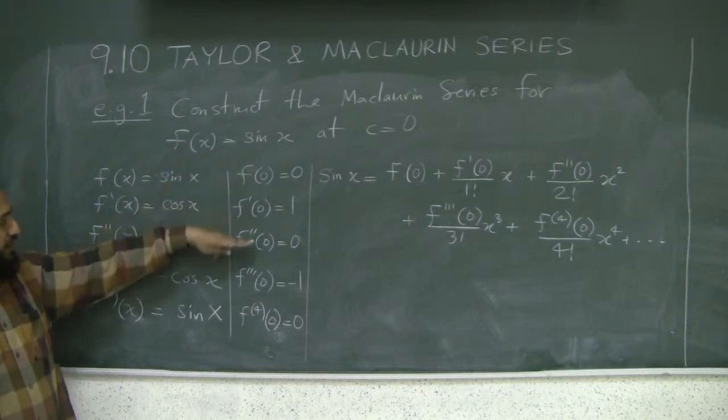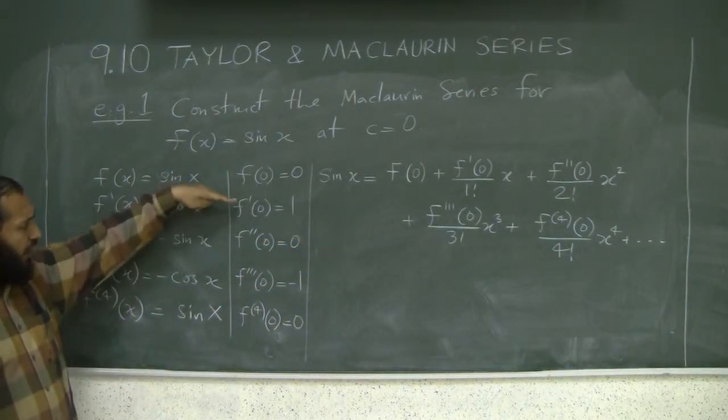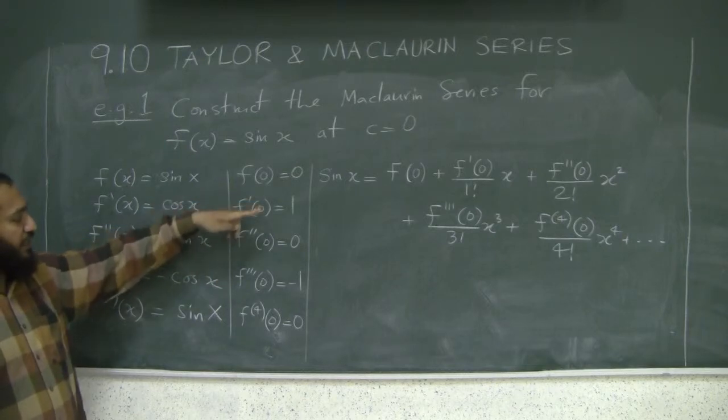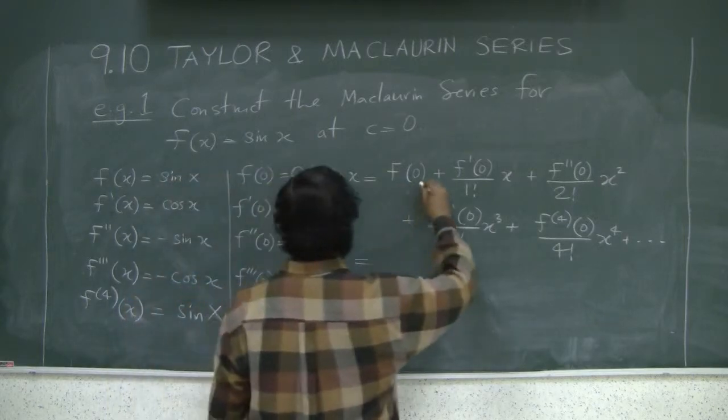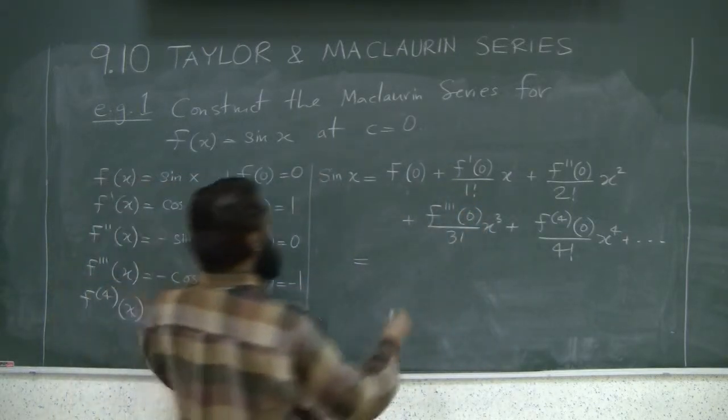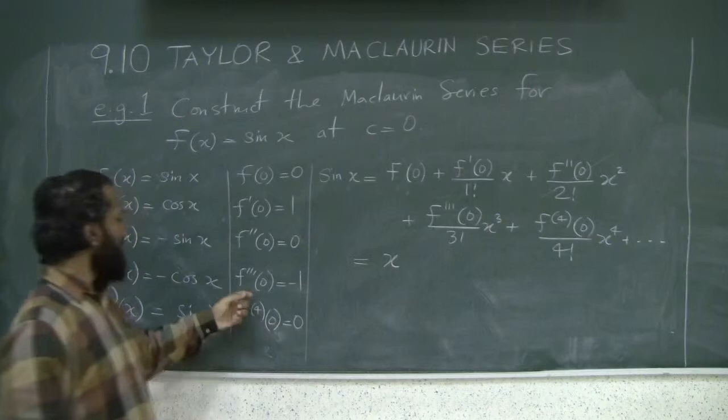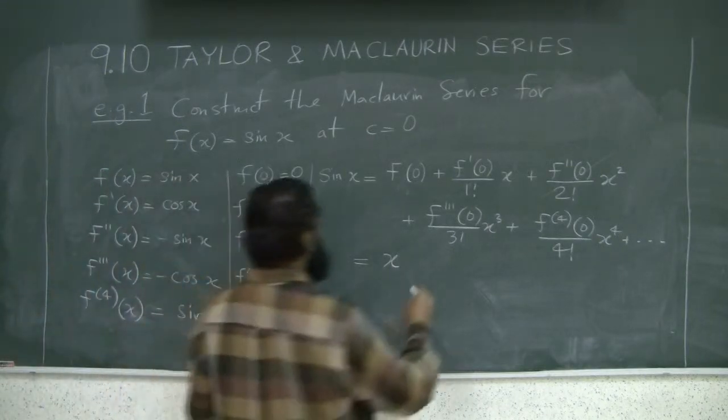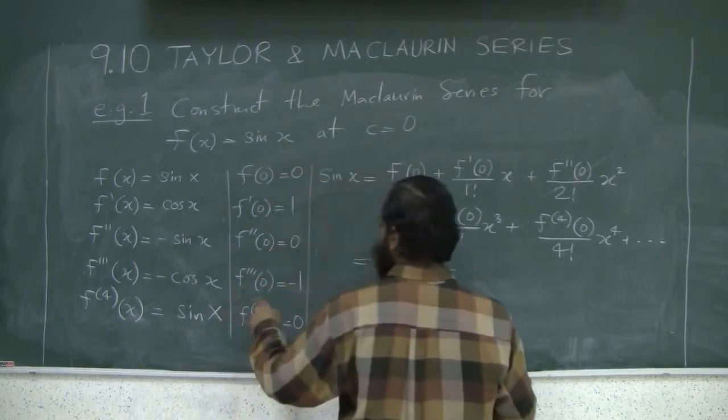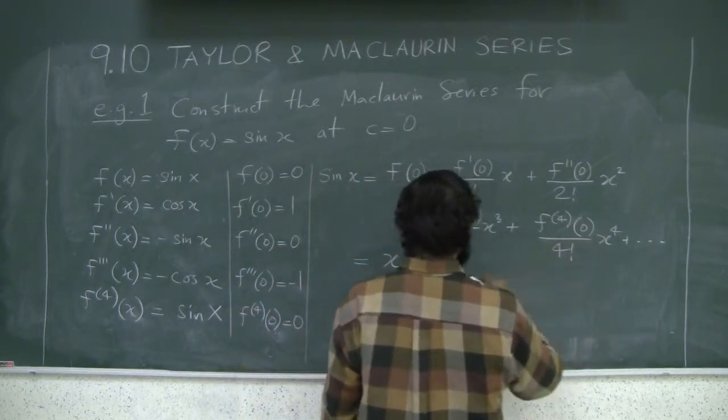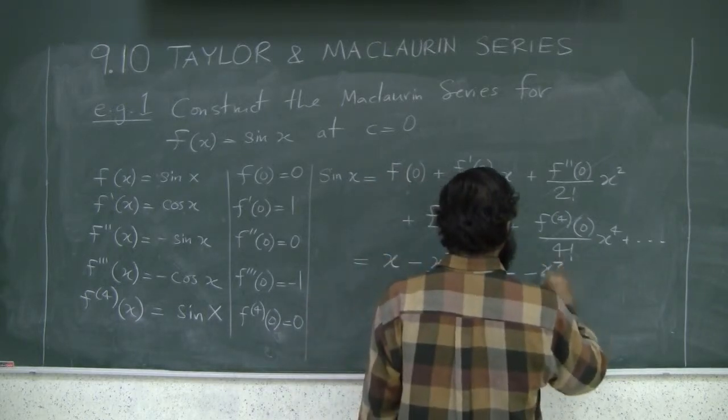All the even derivatives are zero, so the even terms will have zero coefficient. The odd terms will survive and alternate between positive and negative. The zeroth term is zero, so it goes away. f'(0) is one, so you get x. The second derivative term goes away. The third derivative is negative one, so you get negative x cubed over 3 factorial. The fourth derivative term goes away, and it continues like that.